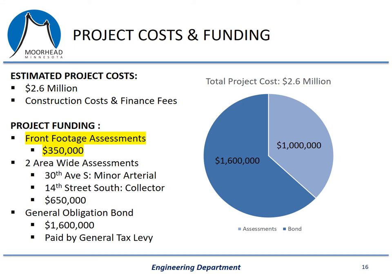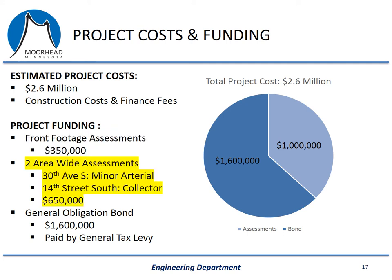By city policy, special assessments will be levied against the benefiting properties. There are two types of special assessments. The first is front footage assessments — properties immediately adjacent to either 30th Avenue South or 14th Street South will receive a special assessment based on the type of work being performed on their street and based on the front footage of their property. For rectangular lots, front footage is determined as the width of the property abutting the street being improved. The second type is an area-wide assessment. By city policy, every property in the city is assigned a north-south collector street and an east-west collector street. 30th Avenue South and 14th Street South are both considered collector streets. Because these collector streets see higher volumes of traffic, they are designed to a higher standard and are more costly to construct, maintain, and replace. When improvements are made to these streets, the city levies an additional area-wide assessment to the properties to which the street has been assigned.